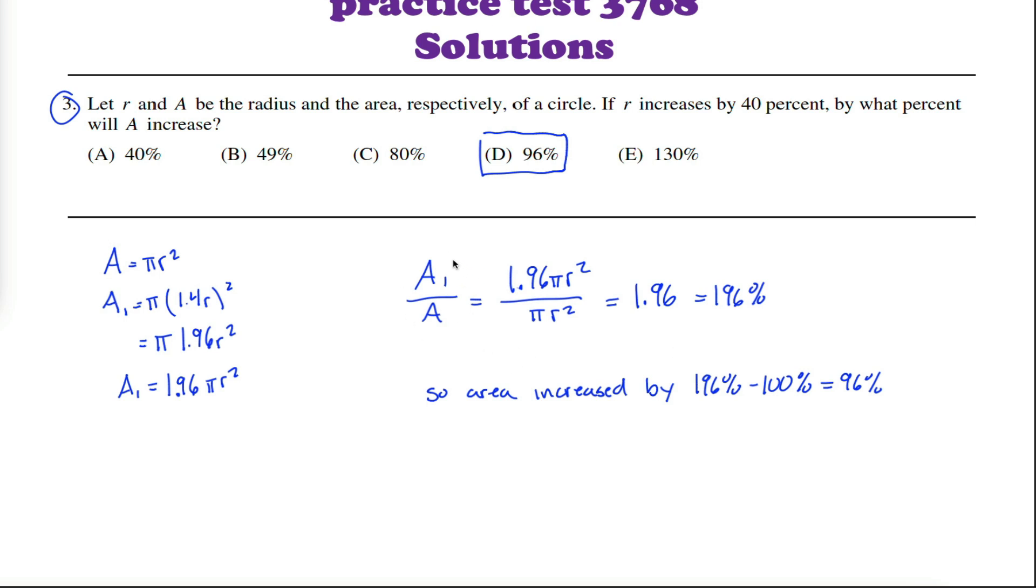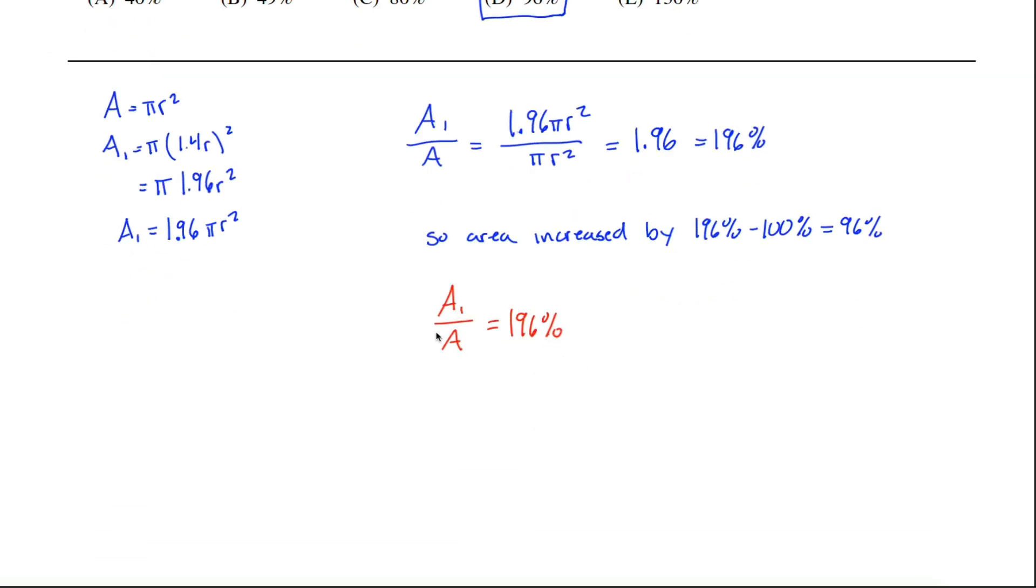But I'm not good at that. I always have a lot to say. And there's one more thing I want to say here. If you have a hard time reading this, if you have a hard time interpreting the fact that A1 divided by A equaling 196% means that the new area is 196% of the old area, what you could do is multiply both sides of this equation by A,